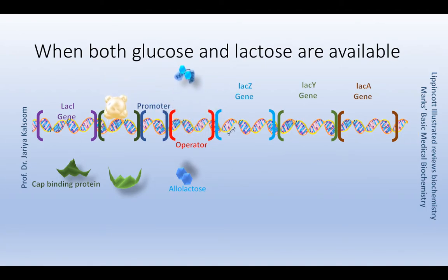When both glucose and lactose are available, the lac operon is not induced and transcription is negligible even if lactose is present in high concentration. Because glucose is the preferred fuel, adenylyl cyclase is inhibited in the presence of glucose, so the cyclic AMP–CAP complex is not formed and the CAP site is empty. Therefore, RNA polymerase is unable to initiate transcription efficiently even though the repressor protein is not bound to the operator.